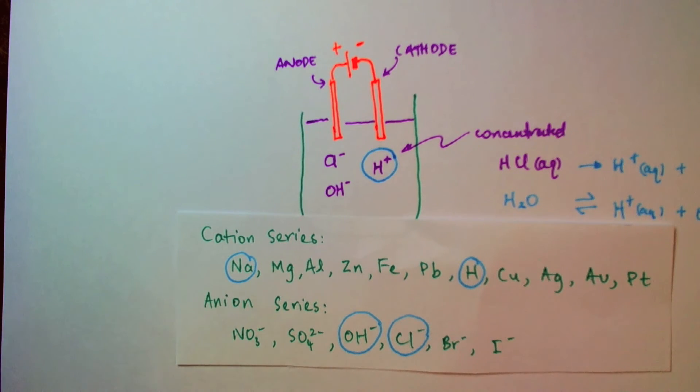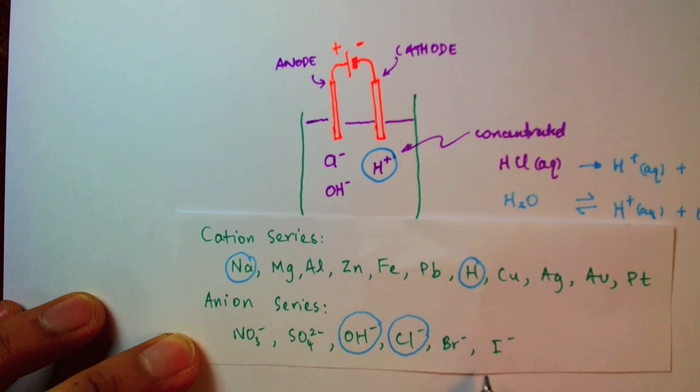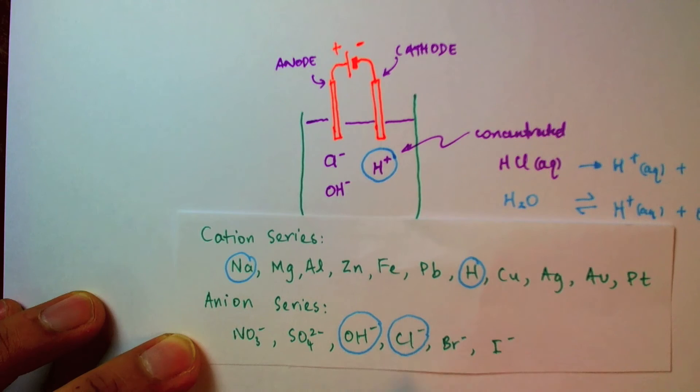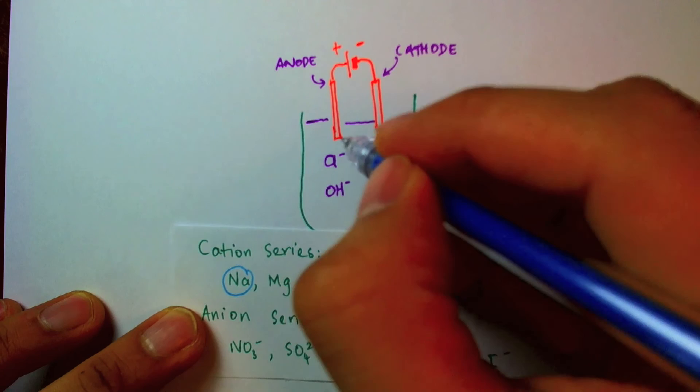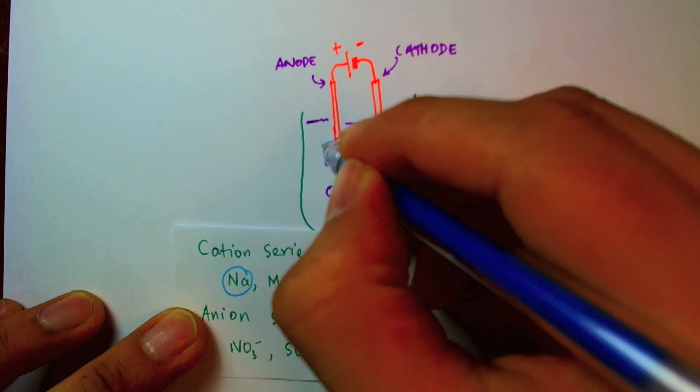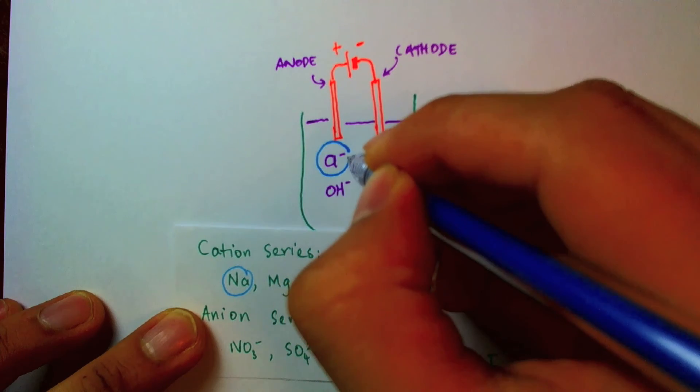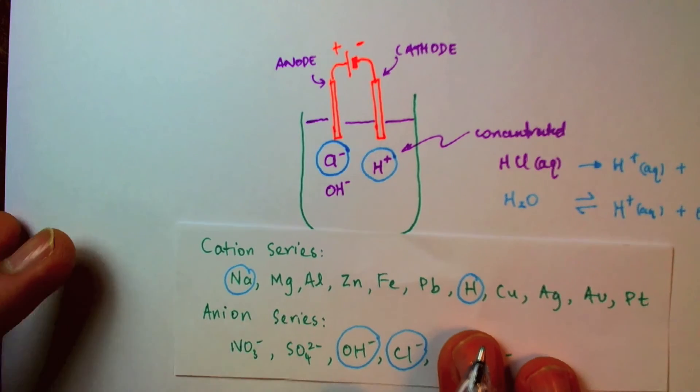We'll take a look again at the reactivity series to remind ourselves which one will be discharged. So recall that the less reactive one is more likely to be discharged because in this case, hydroxide ions are more reactive. So they're more likely to want to hang on to the electrons and not give it up. So chlorine is going to be the one who has to give up its electrons because it is less reactive. So I will circle chlorine to signify that it is the species that will be discharged at the anode.